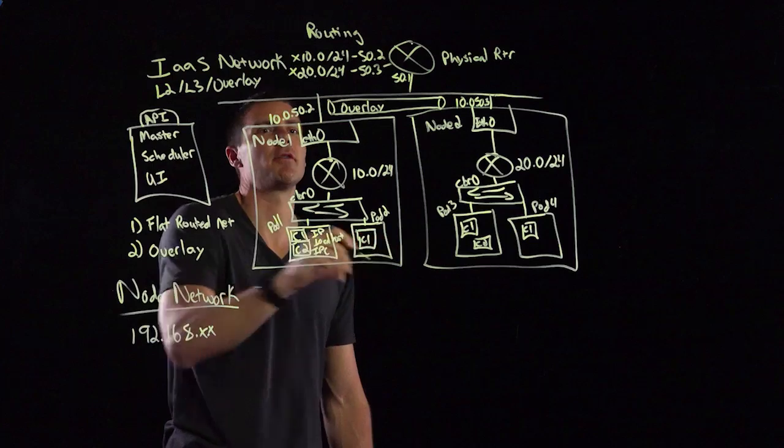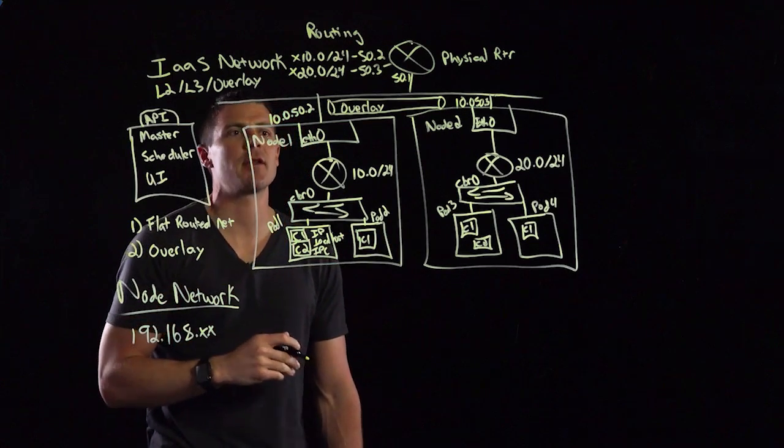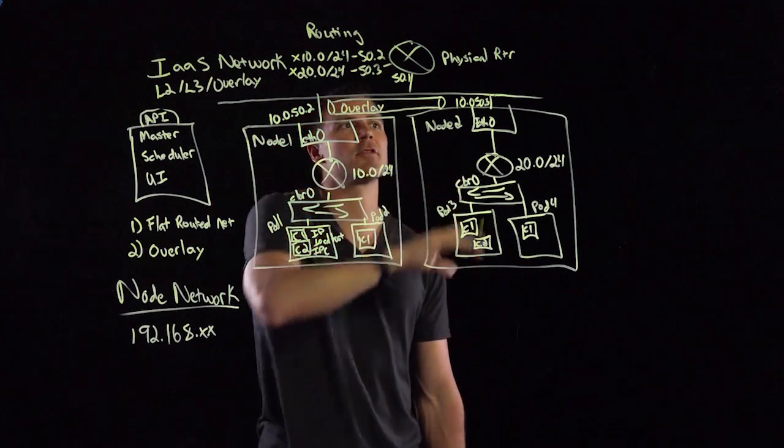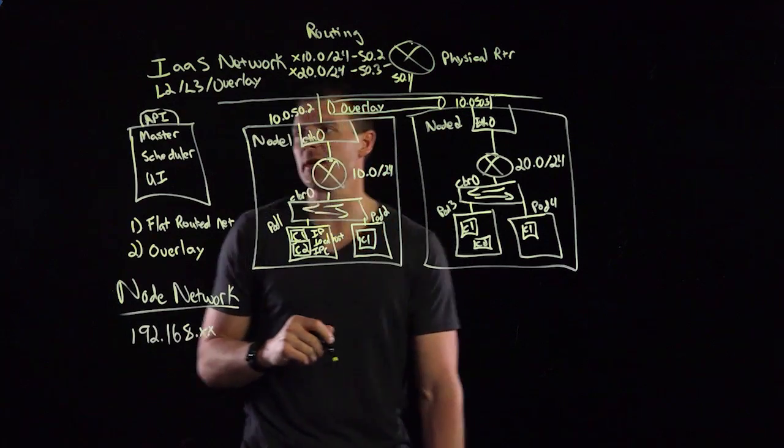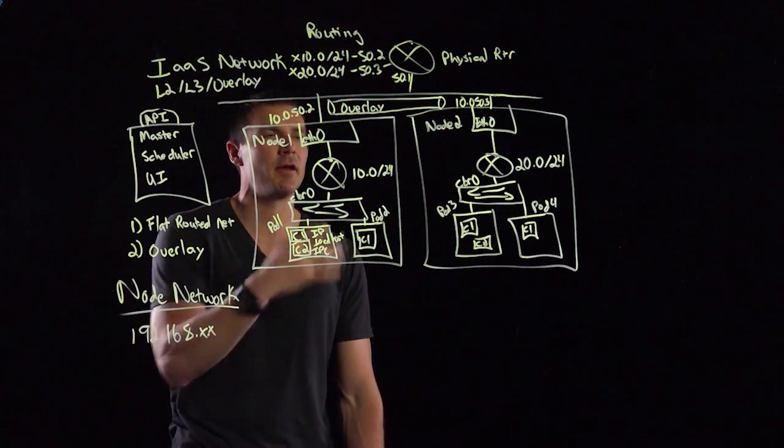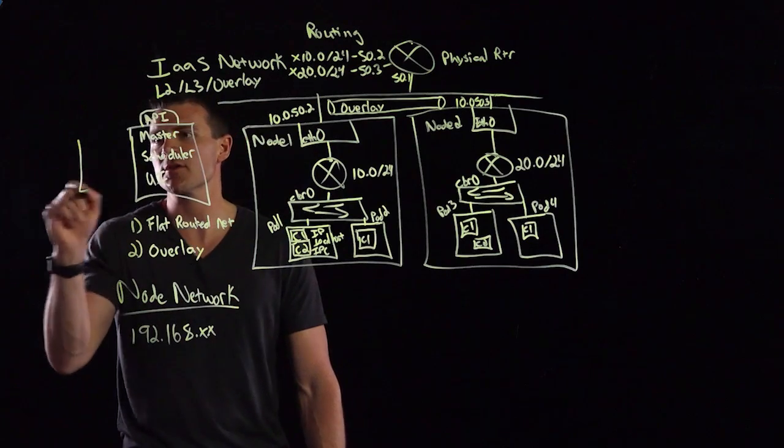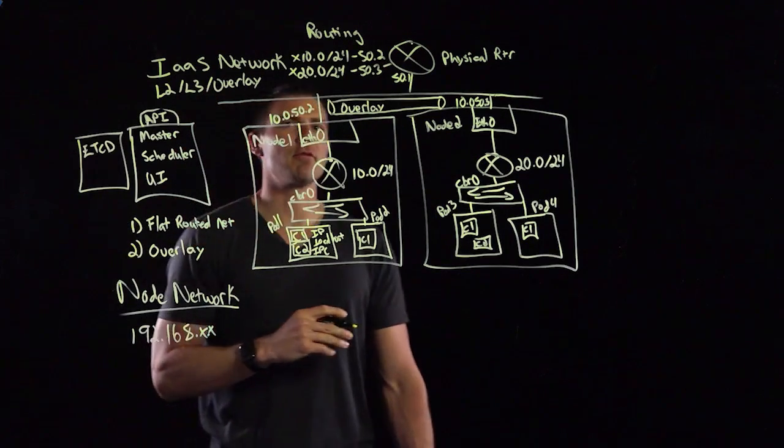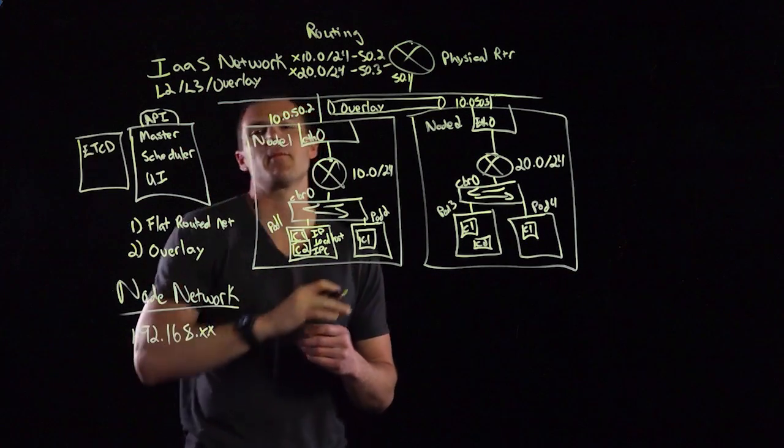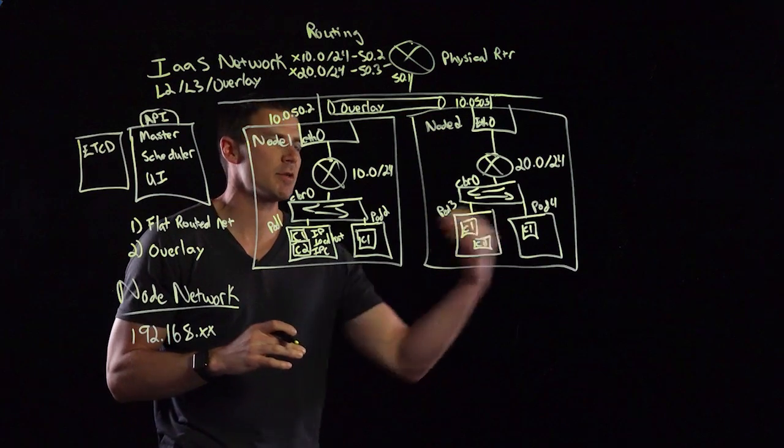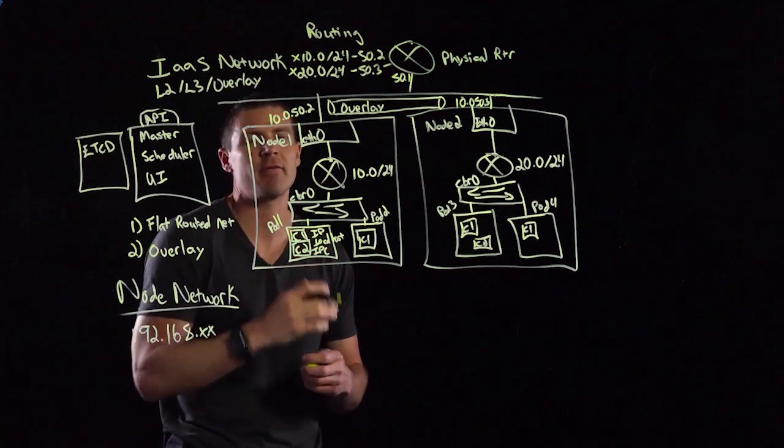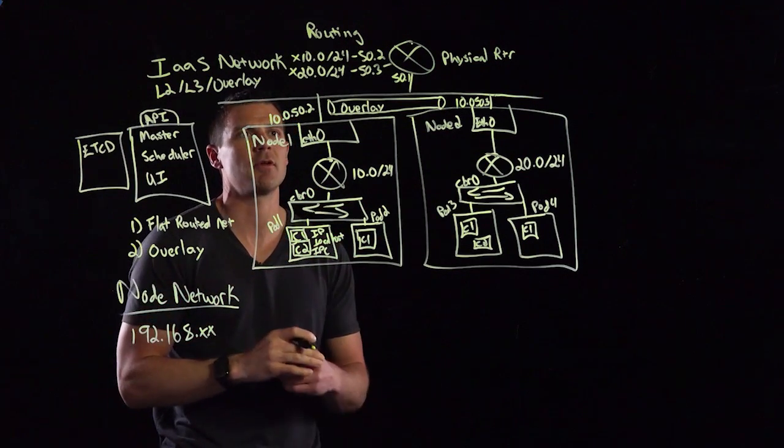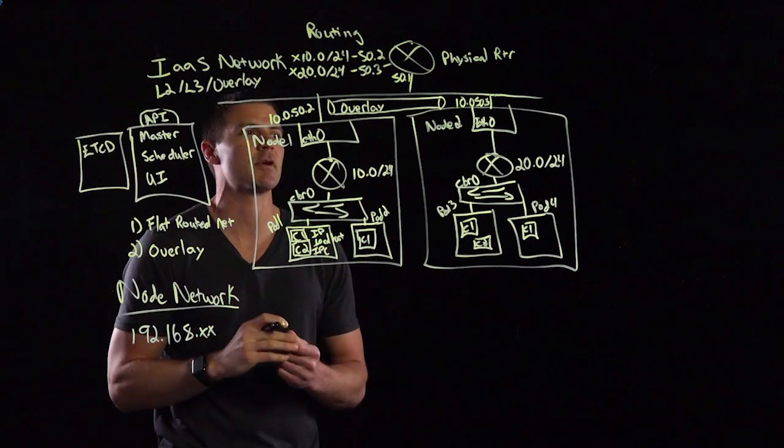Now when pod 1 talks to pod 3, node 1 is actually going to encapsulate that packet into this overlay. The source of the packet is going to be 50.2, and the destination is going to be 50.3. What takes the place of actually providing this functionality in the mapping instead of the routing table is a key value store called etcd. Now we can have pod-to-pod communication. We don't have to worry about static routes across our physical network. Our simple requirement now is node-to-node communication and not necessarily all of these node networks across our physical network.